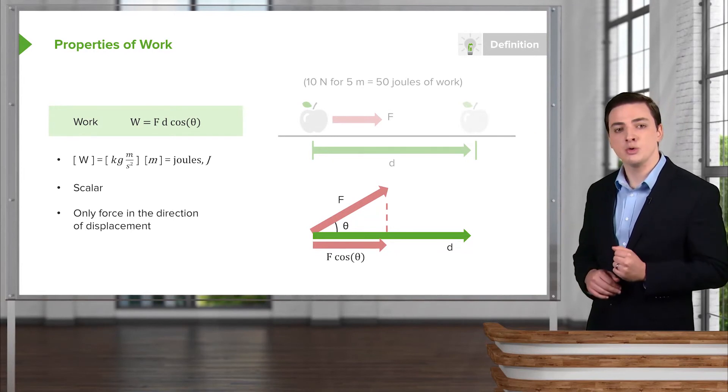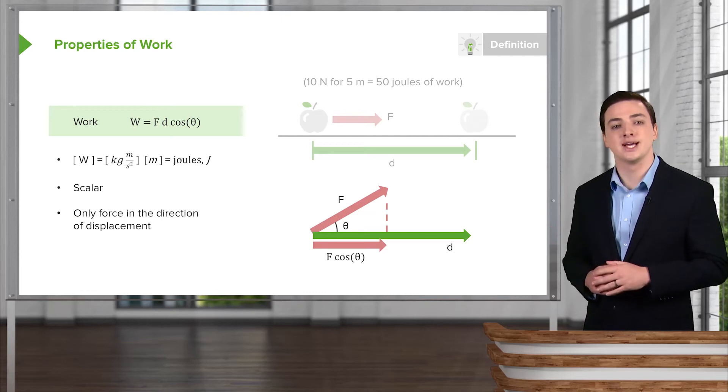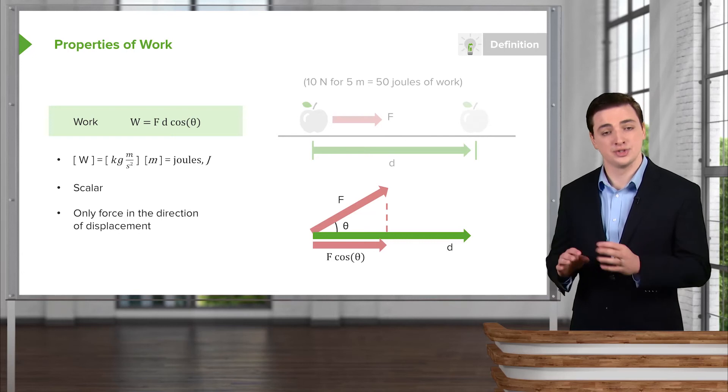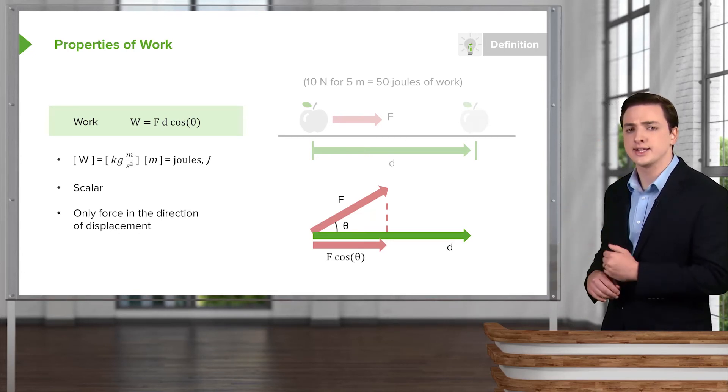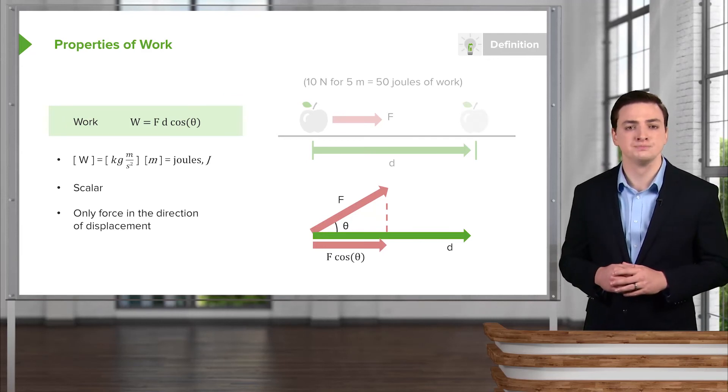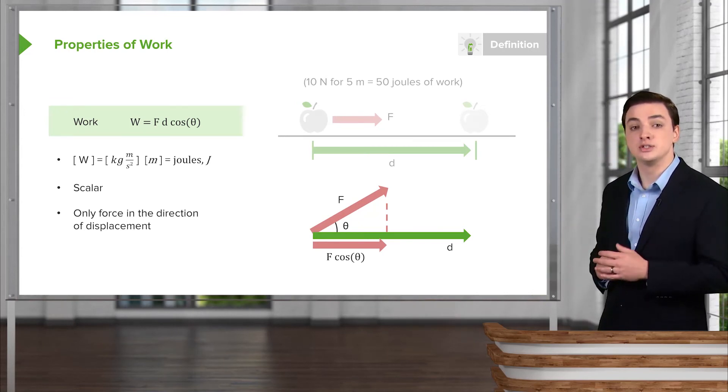...you can see an example here where I have a force being applied at some angle, but the direction that the object is actually moving is in a different direction. It's actually moving towards the right rather than off at an angle. And this might be because there are other forces acting in the problem, keeping it from going in the direction of the force as shown here.